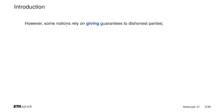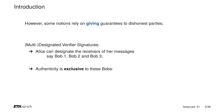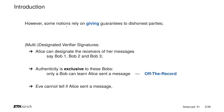However, some security notions capture the exact opposite — namely, that dishonest parties must have some capability. For example, let's consider multi-designated verifier signatures. For these signatures, Alice can designate the receivers of her messages, let's say the three Bobs from before. Then authenticity is given exclusively to these Bobs, so only one of these Bobs can learn if Alice is the one sending a message. In particular, Eve cannot tell if Alice sent a message, even if any subset of these Bobs is dishonest. This property is called off-the-record.